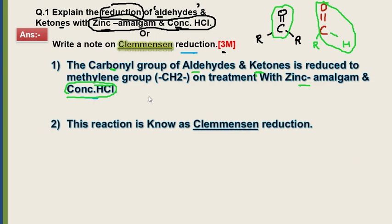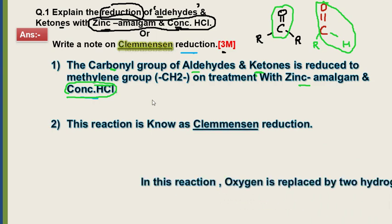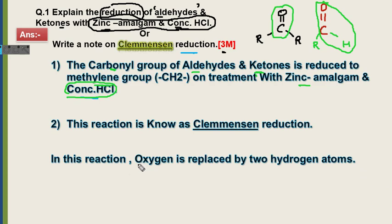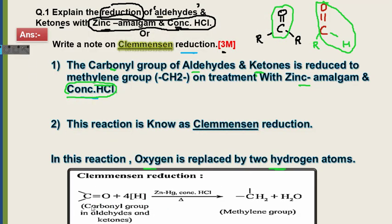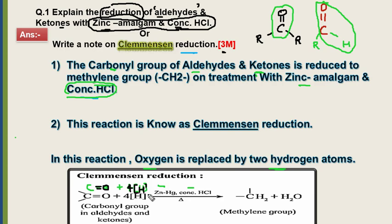Isi ko hum Clemmensen reduction bolte hain. Teen baar mein: humne actually ek oxygen atom ko replace kiya hai do hydrogen atoms se. In this reaction, C double bond O yaani carbonyl group ko 4 moles of hydrogen se treat kiya in the presence of zinc amalgam and concentrated HCl. Yahan pe 4 hydrogen mein se 2 hydrogen ne ek oxygen ko replace kar diya.